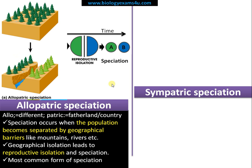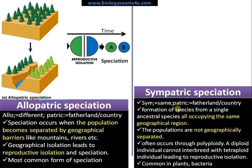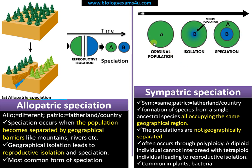The next type is sympatric speciation. 'Sym' means same and 'patric' means country — so it is the formation of species from an ancestral species, all occupying the same geographical area. Suppose this is the original population A; within that population, another population B is formed that later becomes a new species within the same locality.